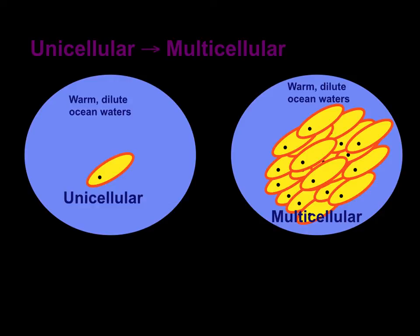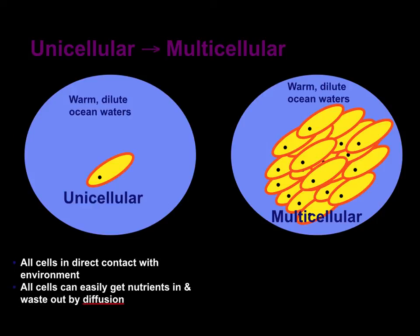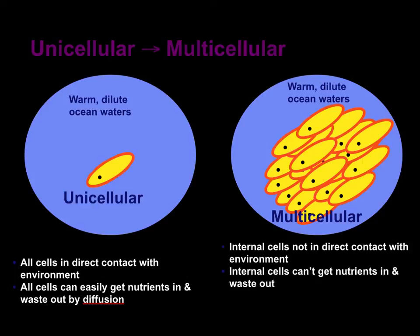What is the difference between unicellular and multicellular? Unicellular cells are in direct contact with the environment, which means that the cells can easily get nutrients in and waste out by diffusion. Multicellular organisms, on the other hand, are not in direct contact with the environment — the internal cells, that is. So, the internal cells can't get nutrients in and waste out easily, so they need organ systems.